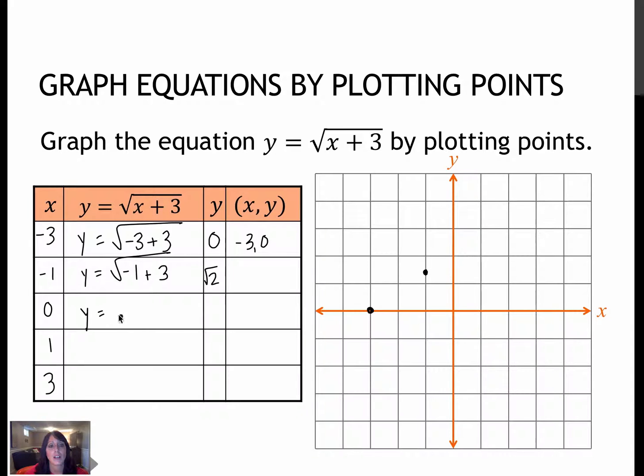If I plug in 0, 0 plus 3 would of course be the square root of 3. Oops, I forgot to write my ordered pair. The square root of 3 is about 1.73. So again, it's going to be a little bit closer to that 2.